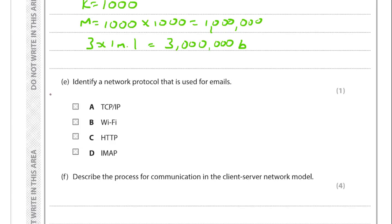Now we have to identify a protocol used for emails. TCP/IP is the Internet Protocol Suite - it includes email protocols but isn't specifically for emails. Wi-Fi is not specifically for emails. HTTP is for transmitting hypertext over the web. So the answer is IMAP - Internet Messaging Access Protocol - which is an inbound mail protocol. We also need to know SMTP (outbound) and POP (Post Office Protocol, also inbound). IMAP keeps mail synchronised between the mail server and your client, whereas POP does not.